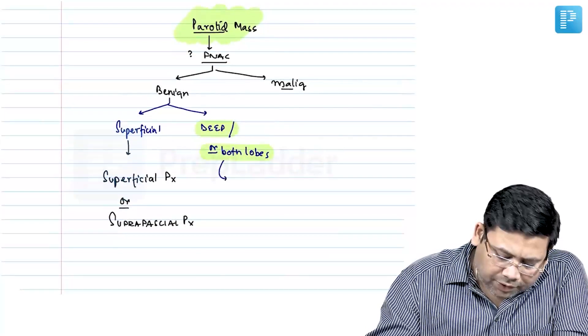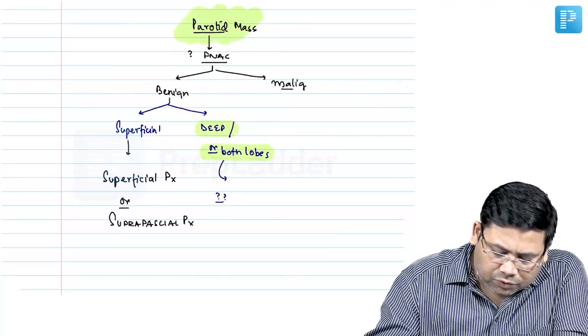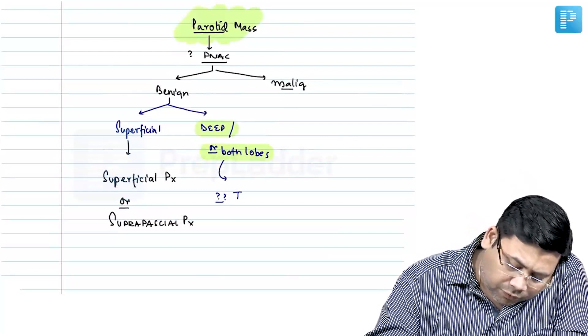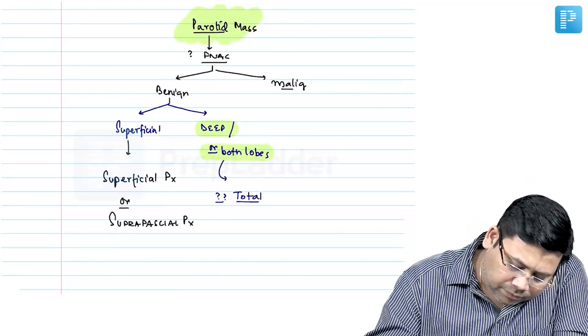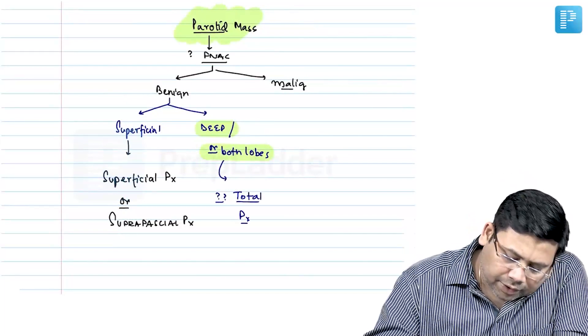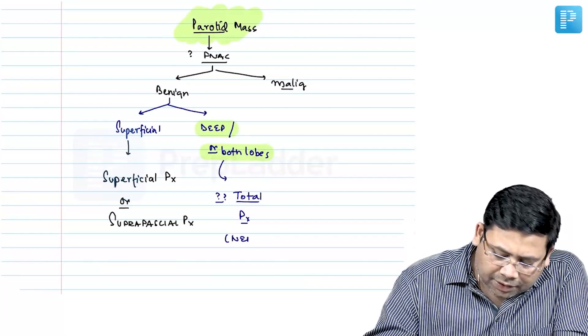If it is a deep lobe tumor, you go for a total parotidectomy. Total parotidectomy. Remember this is nerve sparing.